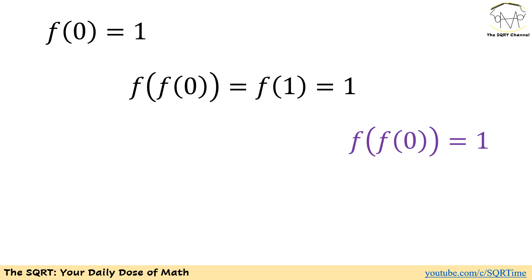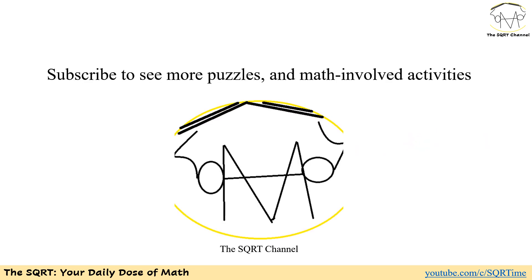Now let's try f of 0 equals 1. Then f of f of 0 is going to be f of 1, and we can say that f of 1 is basically 1. We already know that f of f of 0 is 1 as well, so this case is acceptable. That concludes our solution.